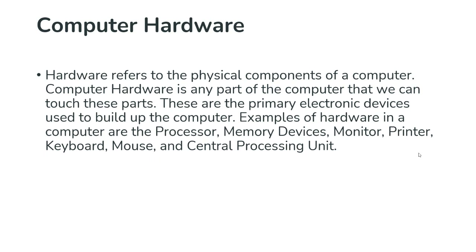Components of a computer system include computer hardware and computer software. Hardware refers to the physical components of a computer — any part we can touch. These are the primary electronic devices used to build up the computer. Examples include the processor, memory devices, monitor, printer, keyboard, mouse, and CPU. All circuitry, electronic equipment like resistors, capacitors, transistors, ICs, microprocessors, and the motherboard are all hardware.